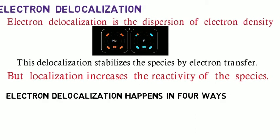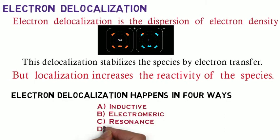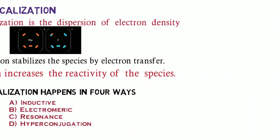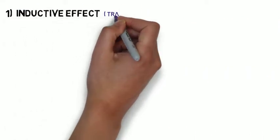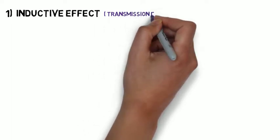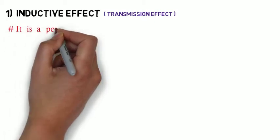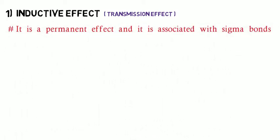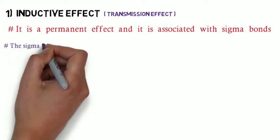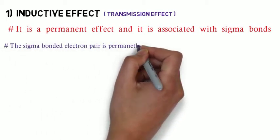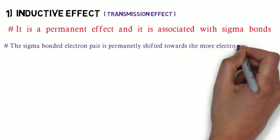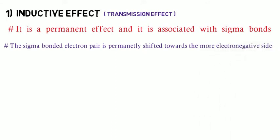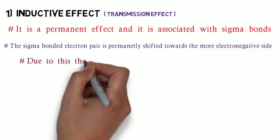Electron delocalization happens in four ways: inductive, electromeric, resonance, and hyperconjugation. The first one is the inductive effect. The inductive effect is otherwise known as the transmission effect because this effect is transmitted throughout the molecule. It is a permanent effect and it is associated with the sigma bonded electrons.